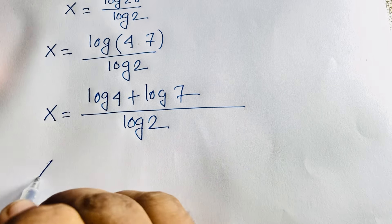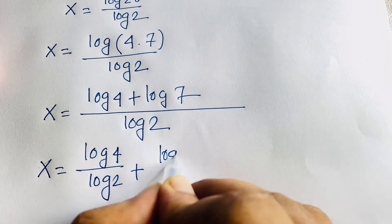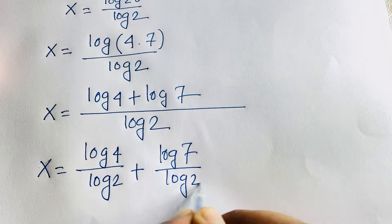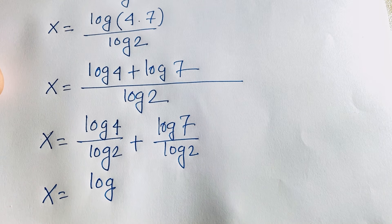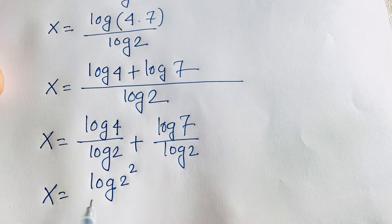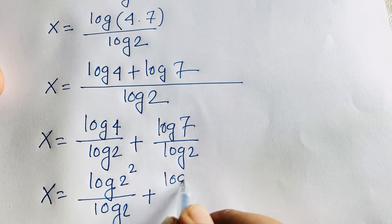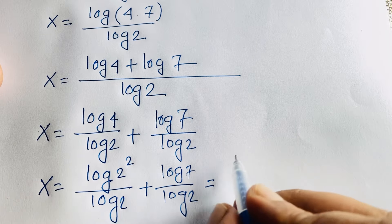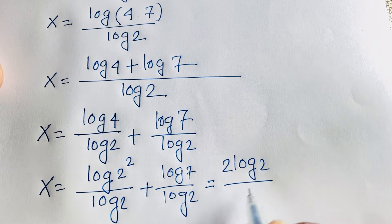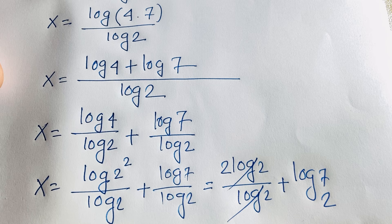Splitting the fraction: x equals log 4 over log 2 plus log 7 over log 2. Since 4 equals 2 squared, log 4 becomes 2 log 2. So log 4 over log 2 equals 2 log 2 over log 2, and the log 2 terms cancel to give 2. The second term, log 7 over log 2, is log base 2 of 7.